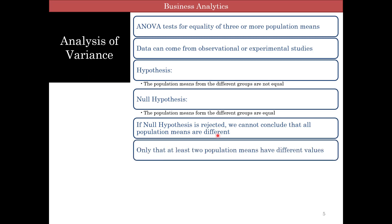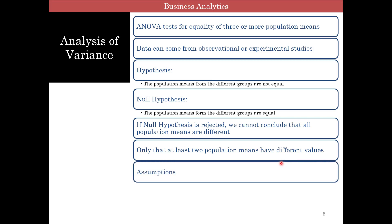If the null hypothesis is rejected, we cannot conclude that all population means are different. Just because we reject the null hypothesis with four or three groups, you can't say all of them are different. All it can say is that at least two of the population means have different values and you don't know which ones. In the A, B, C example, rejecting the null just means two of them are different from each other — it could be A and B, A and C, or B and C. There are other tests to find that, which we'll talk about later.